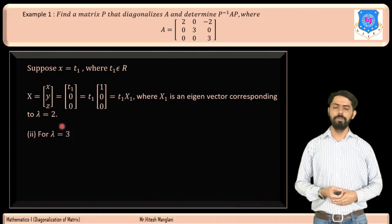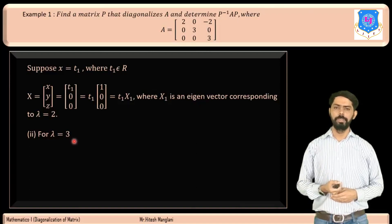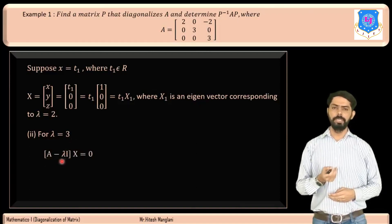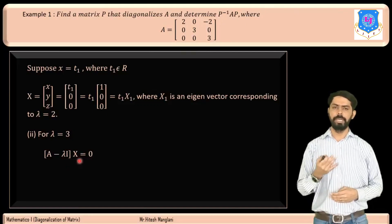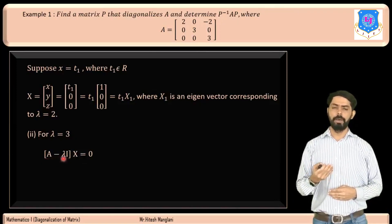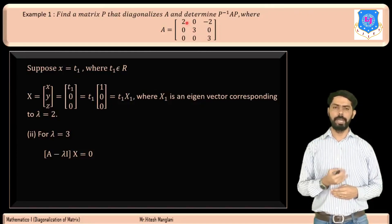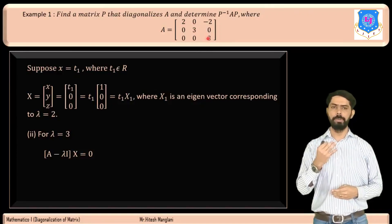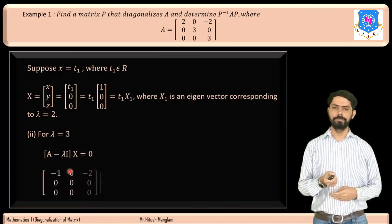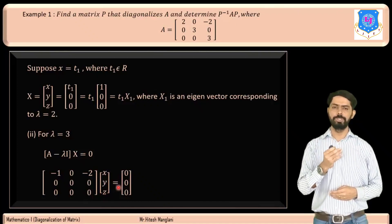Now we find eigenvectors for λ = 3. Using (A − λI)X = 0, we subtract λ = 3 from the diagonal: 2−3 = −1, 3−3 = 0, 3−3 = 0. So A − 3I = [−1, 0, −2; 0, 0, 0; 0, 0, 0], giving the equation −x − 2z = 0, which simplifies to x + 2z = 0.